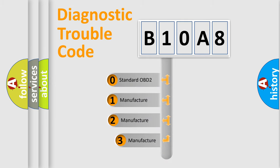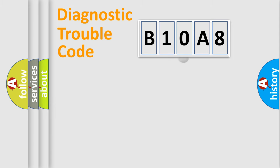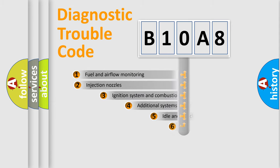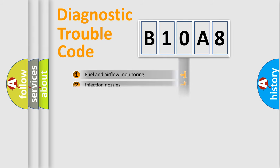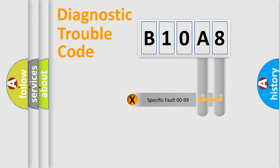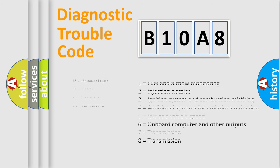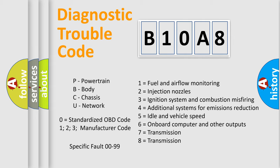If the second character is expressed as zero, it is a standardized error. In the case of numbers 1, 2, 3, it is a more prestigious expression of the car-specific error. The third character specifies a subset of errors. The distribution shown is valid only for the standardized DTC code. Only the last two characters define the specific fault of the group. Let's not forget that such a division is valid only if the other character code is expressed by the number zero.